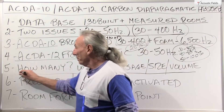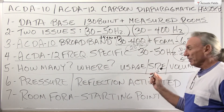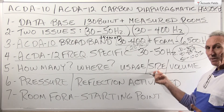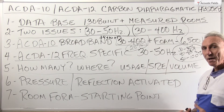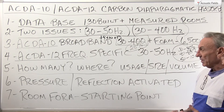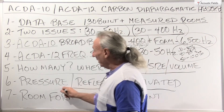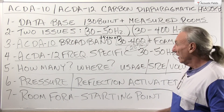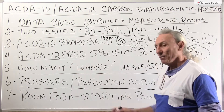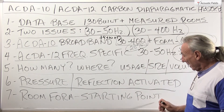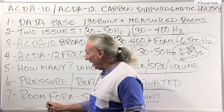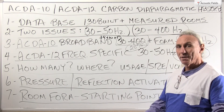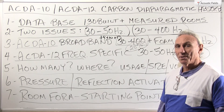How many units and where do we put them in the room? It's all dependent on usage, size, and volume. We need to know what you're doing, how big the room is, and how much volume we have to work with for the low frequency energy. These are pressure and reflection activated devices, so they have to go in certain positions of the room. The easiest way to get assistance is to fill out our room form — there are plenty of places on our website where you can do that.